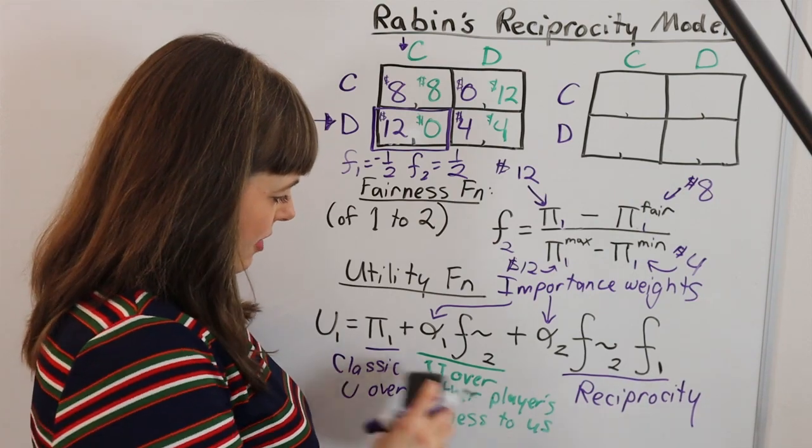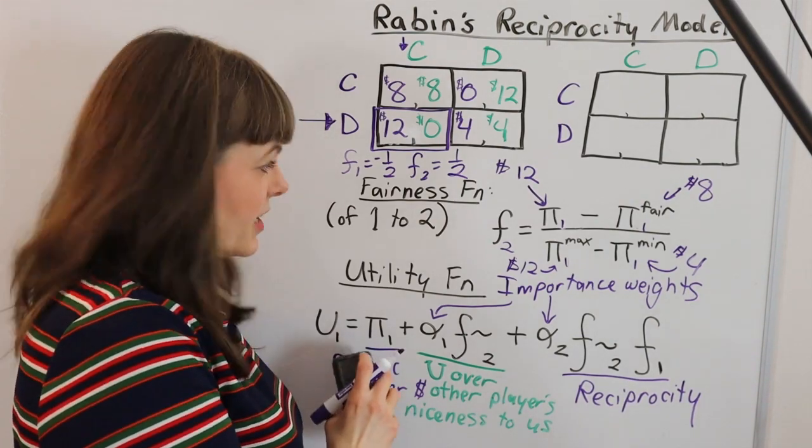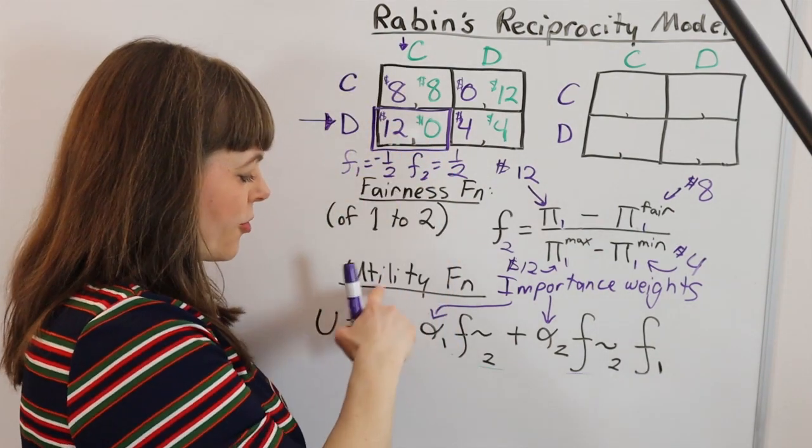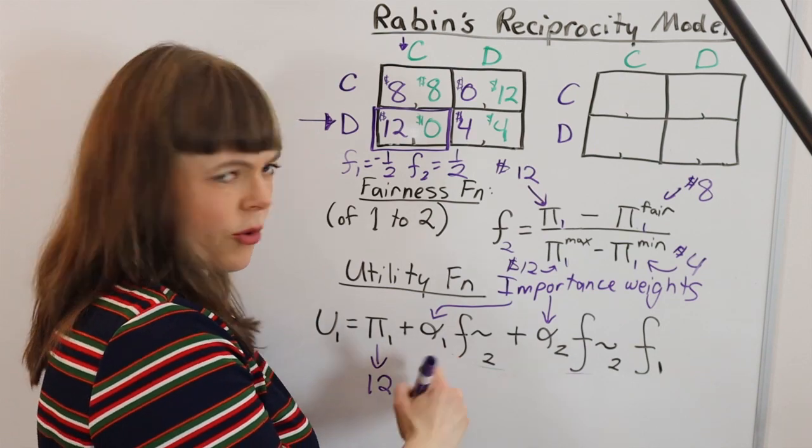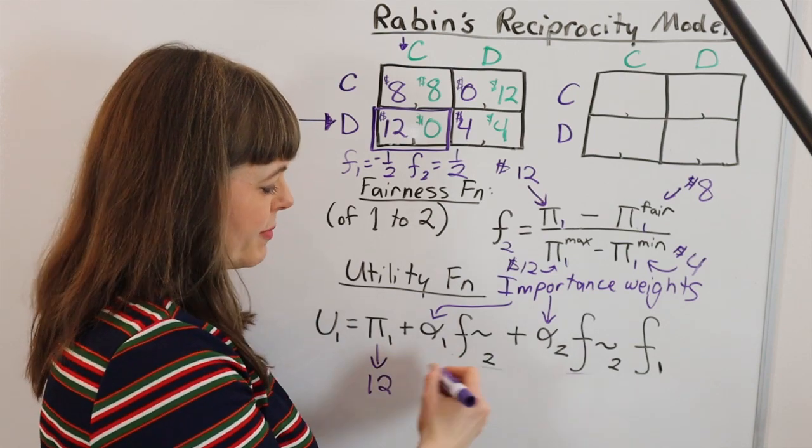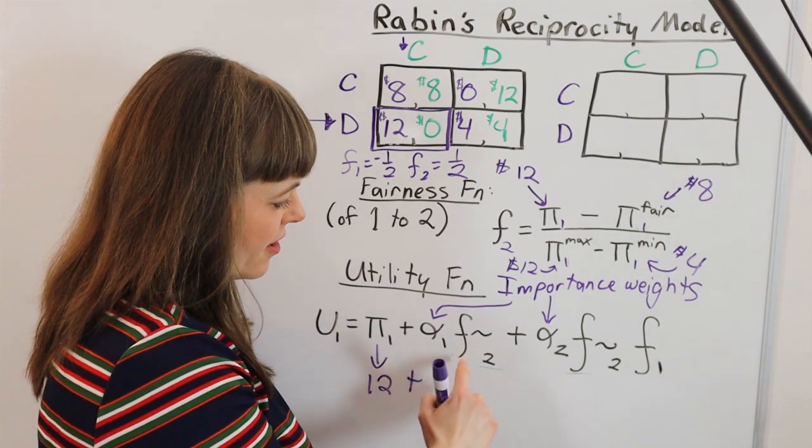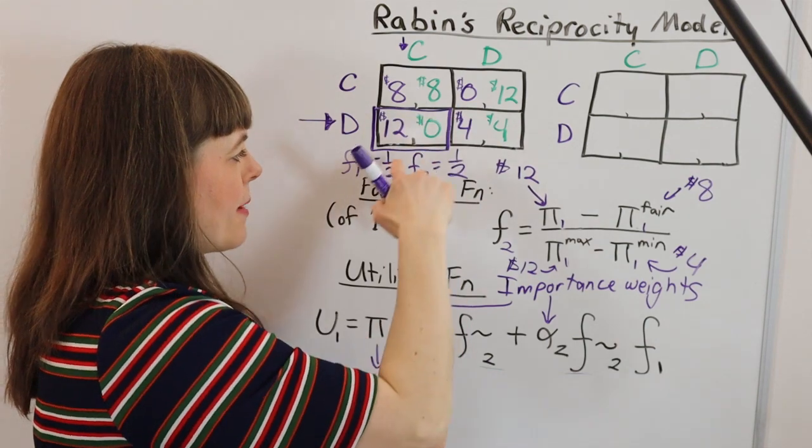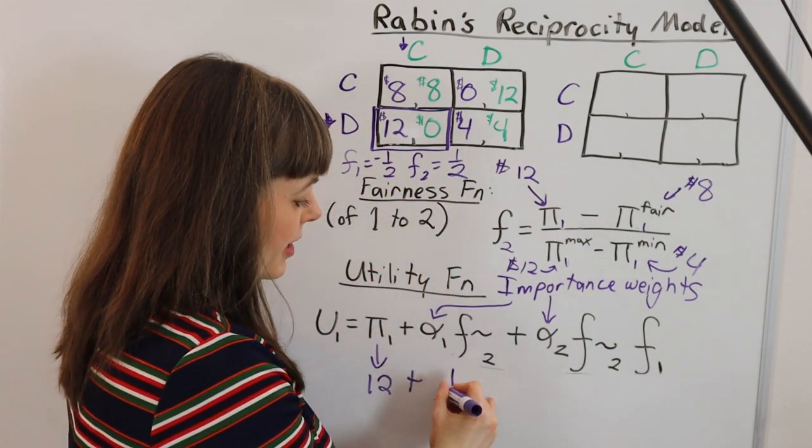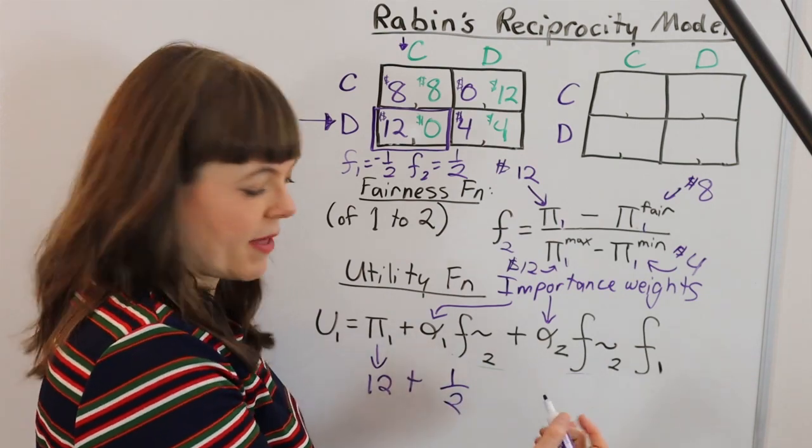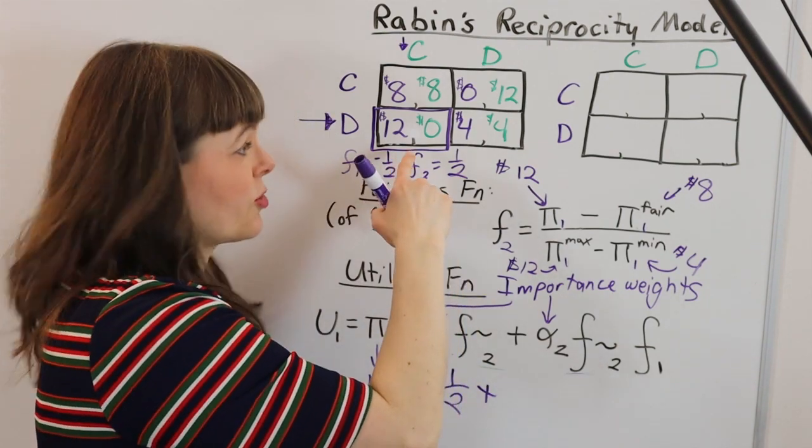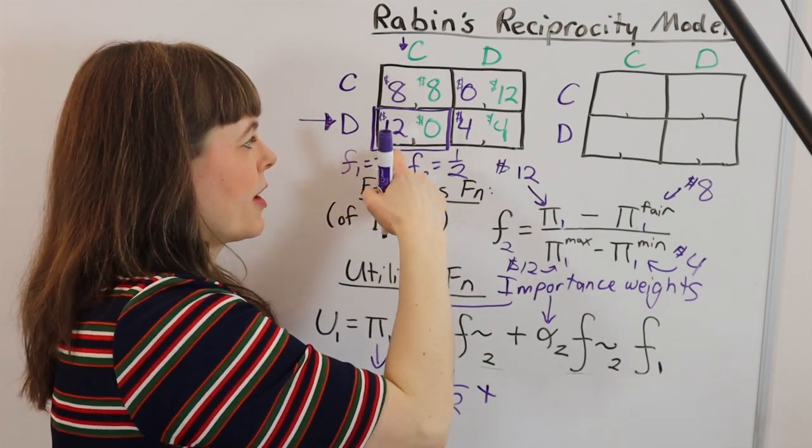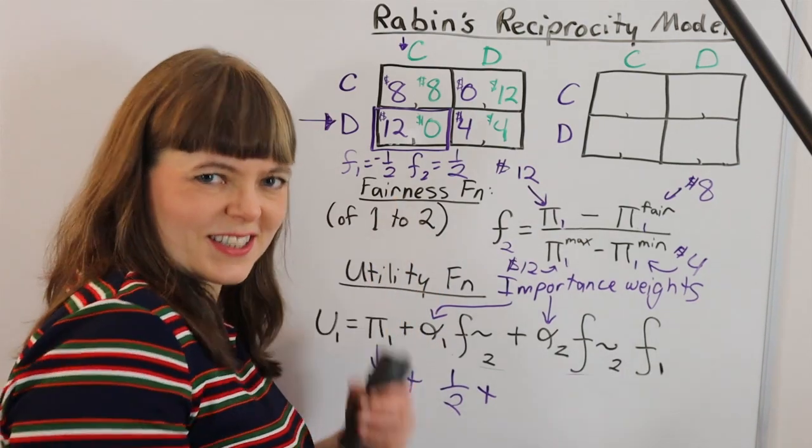Okay so let's come back down here and let's just finish out player one's utility in this situation. Player one actually gets 12, so their classic consumption utility is 12. We're going to let alpha, the importance weights, just be one because that's not what we're focused on right here. So player two's fairness toward player one, we've already figured out in that box player two is being fair to player one. So player one gets positive utility from that happiness.